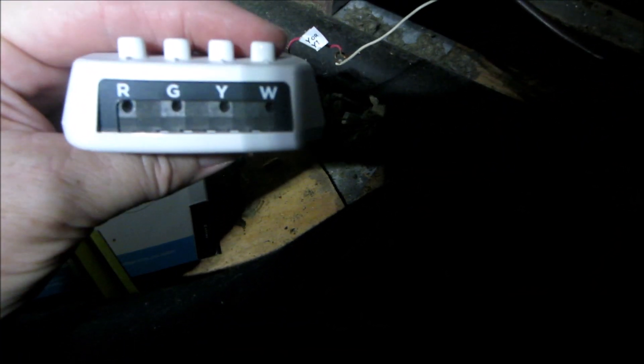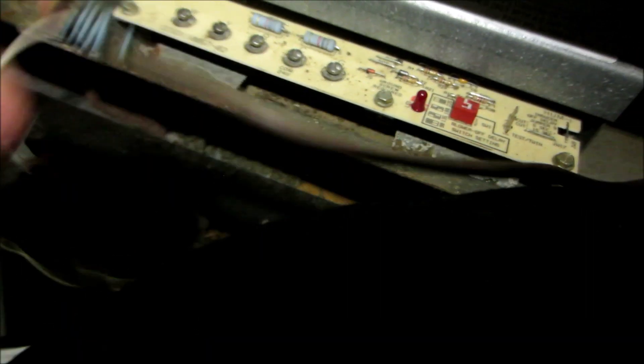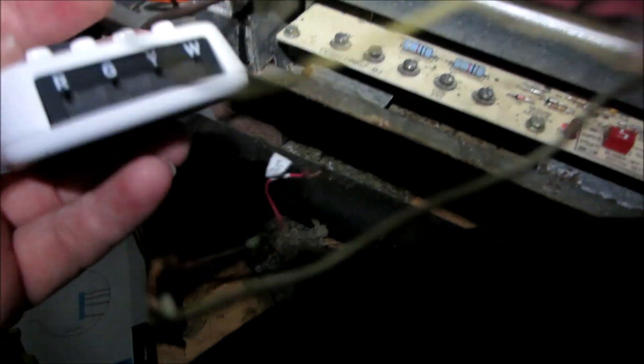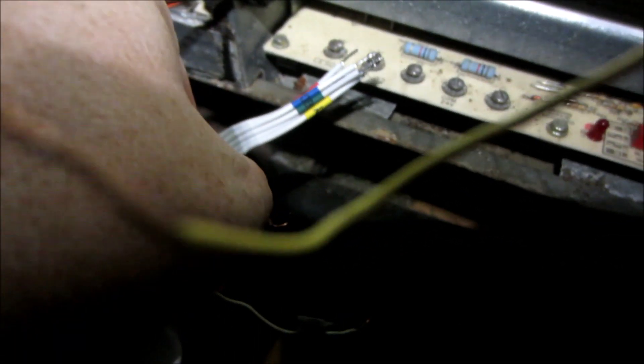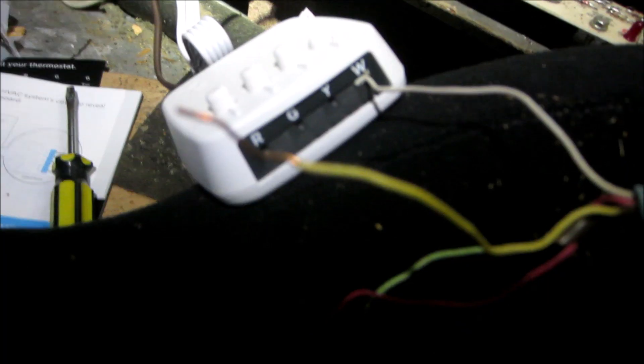With this extender, I have to put all four into these. So I'm going to put the red where the R is, the G where the green is, yellow and white. The one that comes from the inside thermostat goes on this end here, and then these on the other end go back over here where these were originally.